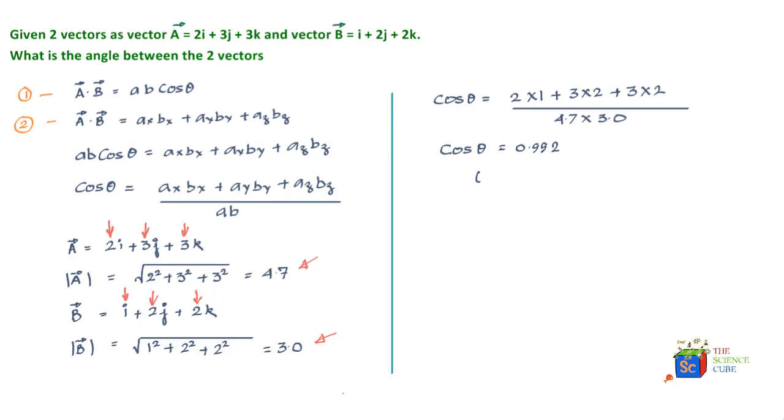And if you take the cos inverse of this number, cos inverse of 0.992, which gives θ as 7.25 degrees.